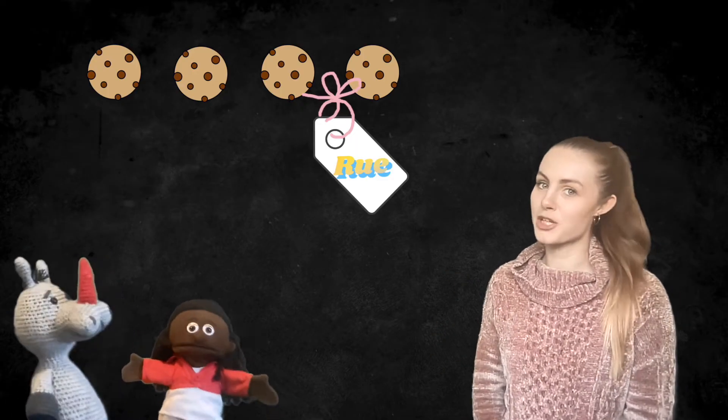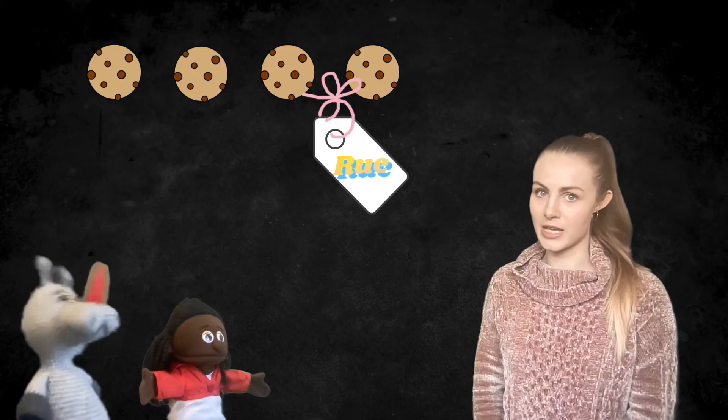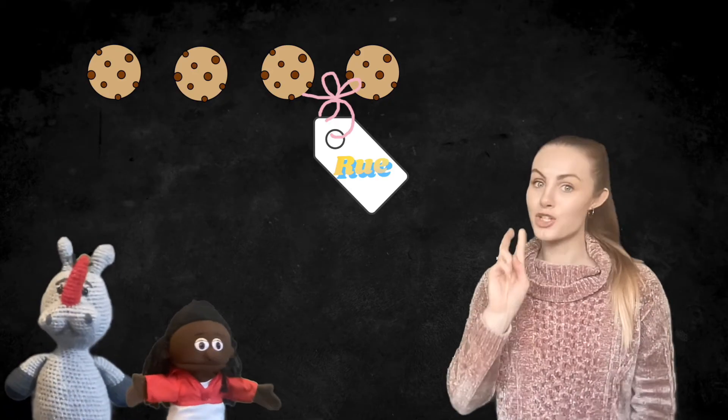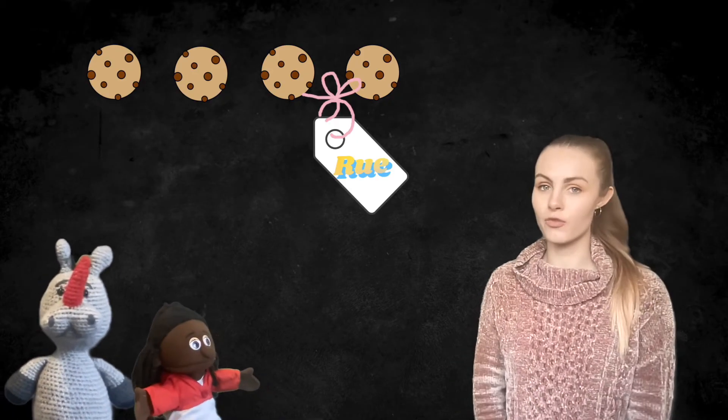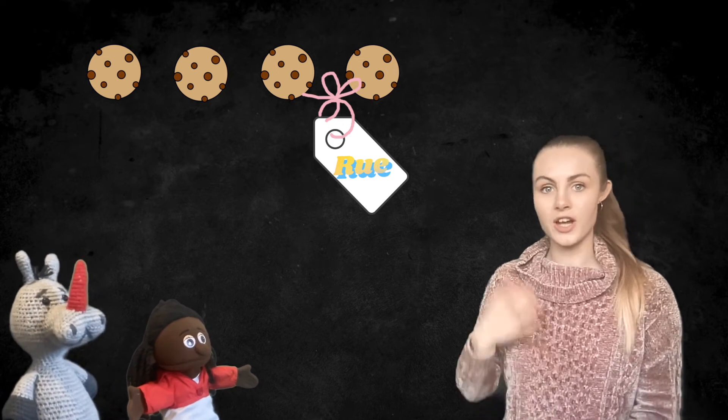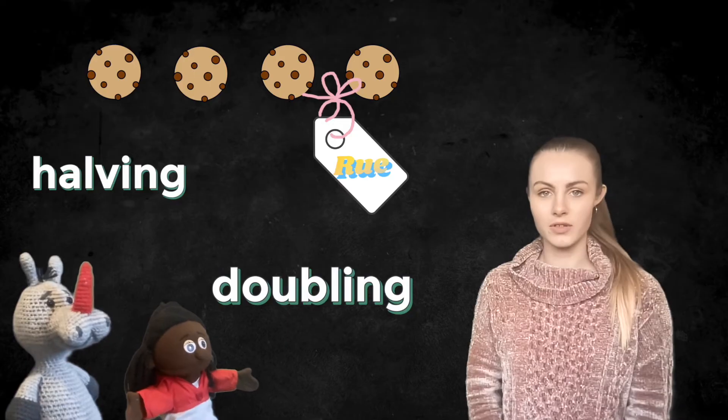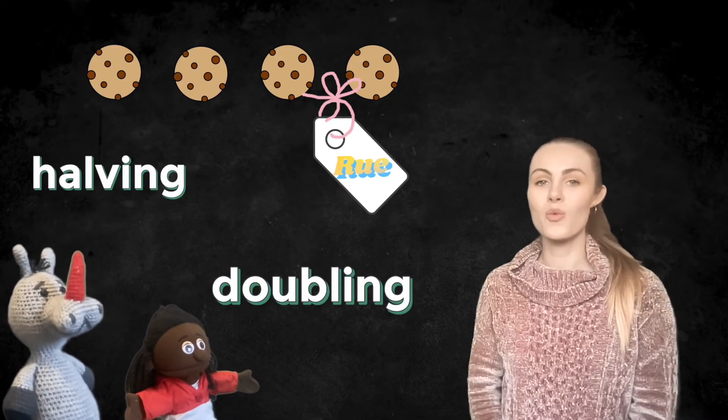We're going to begin with a problem. Here we've got four cookies but they all belong to Roo and as you can imagine, Pig is not very happy. There are two things we can do to solve this problem. We could halve the amount we already have or we could double the amount we already have. Let's start with halving.